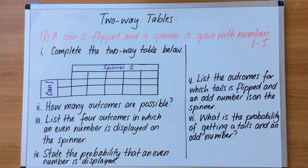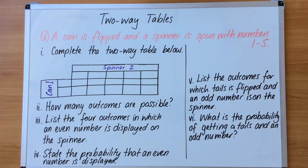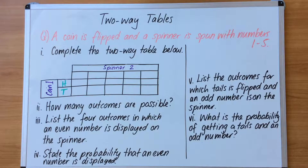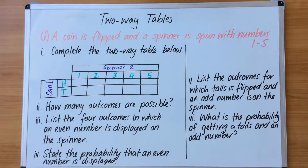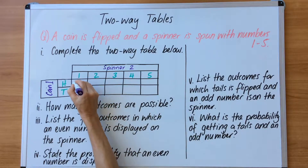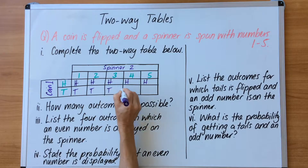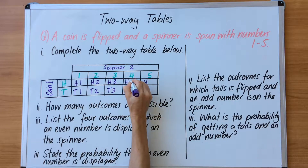Let's now look at this question. A coin is flipped and a spinner is spun with numbers one to five. Complete the two-way table below. I've put the coin first and the spinner second as indicated by the question. The coin has heads or tails, so that gets filled in first. The spinner has numbers one to five, so I fill that in too. Once done, I write the combinations — the easiest way is to write all your heads first, then tails, and then come down with the numbers. This makes it easier and reduces the chance of error.